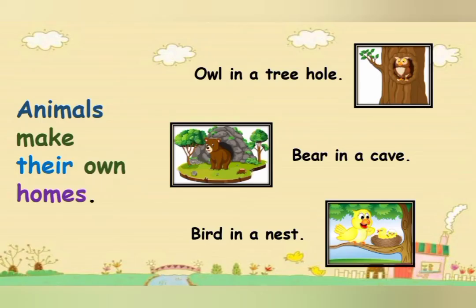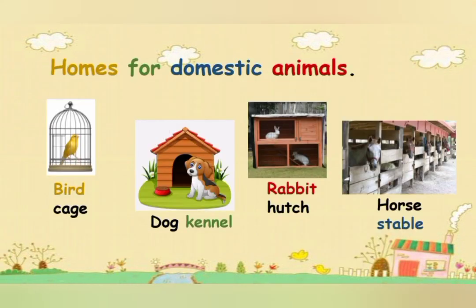And the last thing is where do animals live? جانور رہتے کہاں ہیں؟ Students, animals make their own homes. جانور اپنے گھر خود بناتے ہیں. You can see an owl in a tree hole, bear in a cave and bird in a nest. Students, animals feel safe in their homes. As we have learned, we can keep pet animals at home. You can keep a bird in a cage, dog in a kennel, rabbit in a hutch, and horse in a stable.